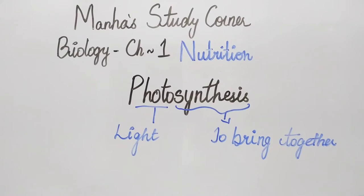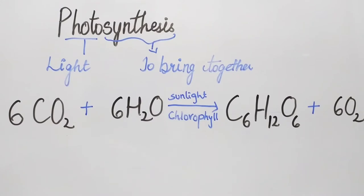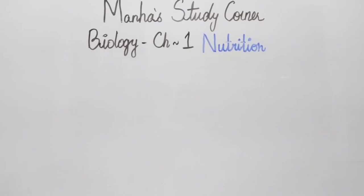So the plants bring together carbon dioxide and water in the presence of sunlight and with the help of one molecule, chlorophyll, to produce glucose. Also, oxygen is released as a byproduct. Hence, plants have an autotrophic mode of nutrition as they are independent of other organisms to give them food.